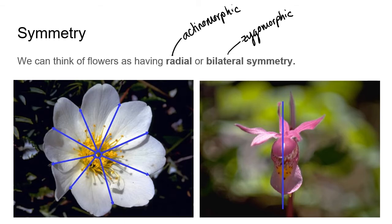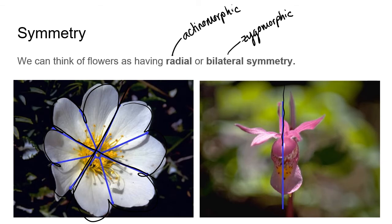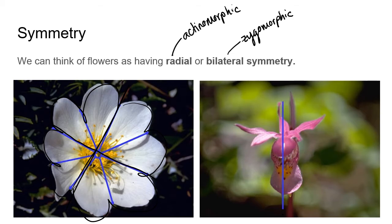Radial symmetry means multiple lines of symmetry — you can draw a line across the flower in many directions and have the same shape on either side. Bilateral symmetry, like in the calypso orchid, means only one line of symmetry, much like the human body — you can draw a line straight down and have roughly the same on either side, but not in any other direction.